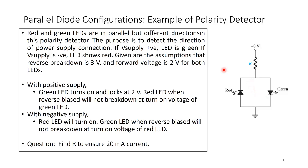With negative supply, the red LED turns on and also locks the voltage at 2 volts. The green LED is reverse biased and will not break down because its reverse breakdown voltage is 3 volts — higher than the locked 2 volts.